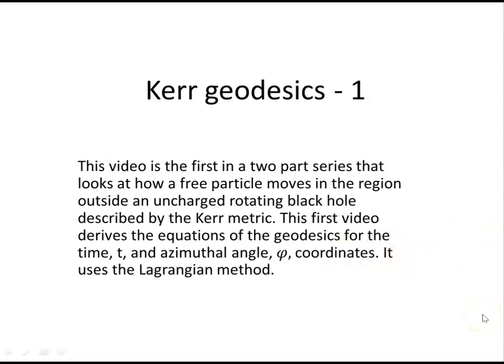This video is the first in a two-part series that looks at how a free particle moves in the region outside an uncharged rotating black hole described by the Kerr metric. This first video derives the equations of the geodesics for the time t and azimuthal angle phi coordinates using the Lagrangian method.